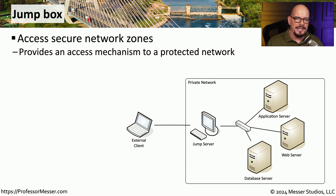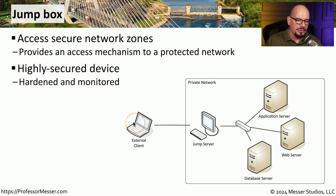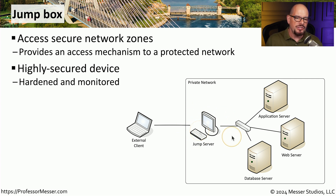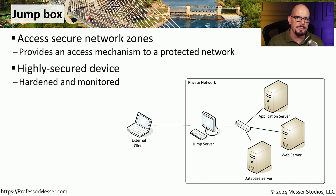Instead of individually connecting to devices, some organizations create a jump server that allows you to connect to one device, from which you can jump to other devices within that organization. From your external device, you would use some type of VPN tunnel or SSH connection to initially connect to the jump server. Because this jump server is often an externally facing device where anyone on the internet could potentially connect, it needs to be very hardened, using authentication with multiple factors to prevent anyone from brute-forcing their way in.